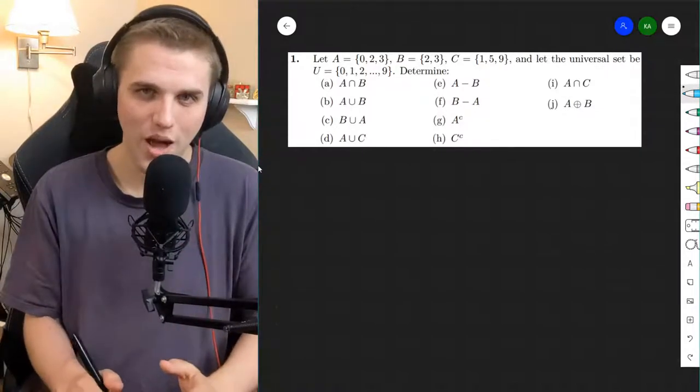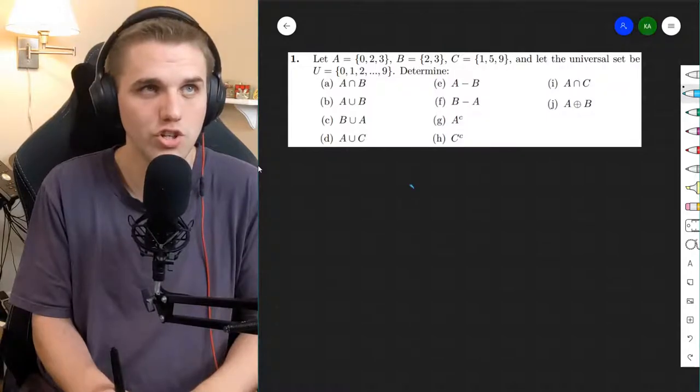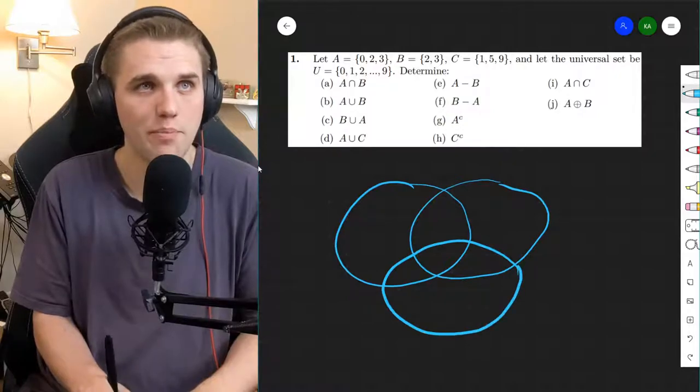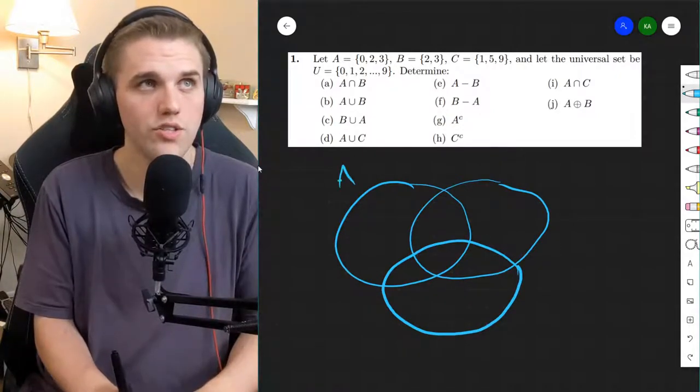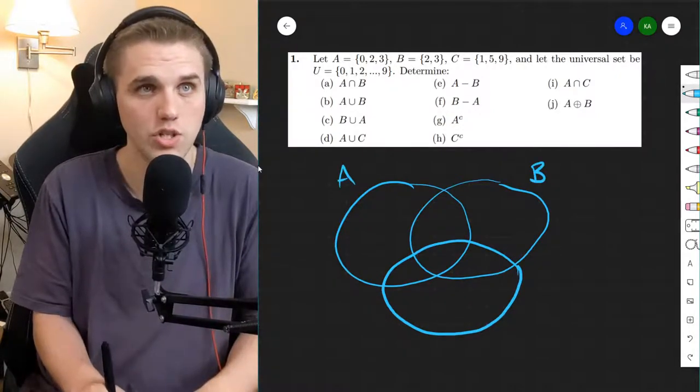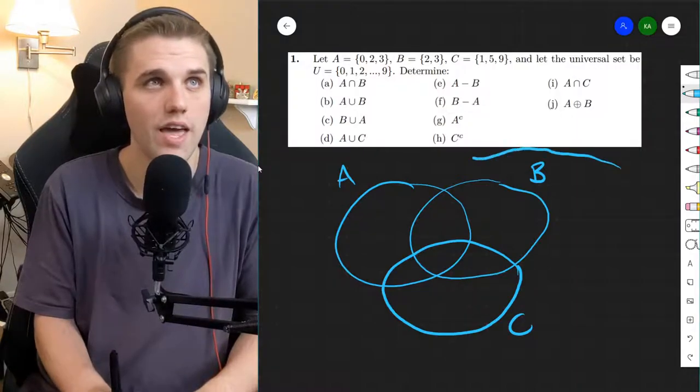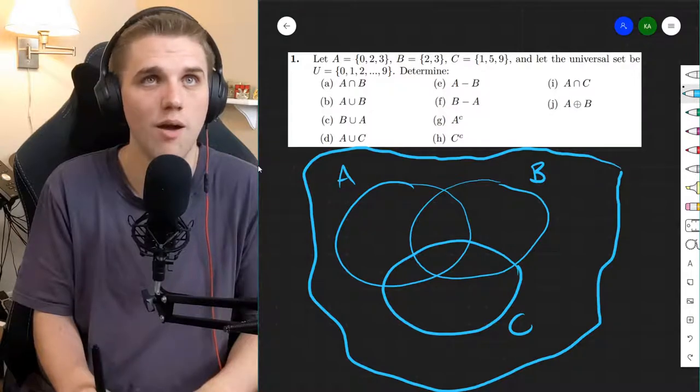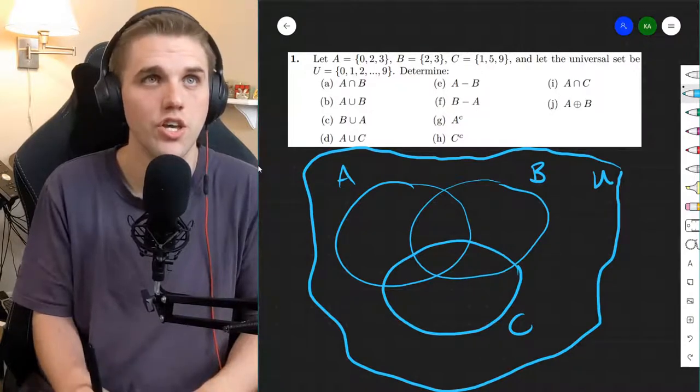So before we get started, I want to show you what this looks like visually so that we can get a better understanding of how these set operations work. So let's say we have three sets, which we do, A, B, and C. And then this entire Venn diagram exists in the universe U.